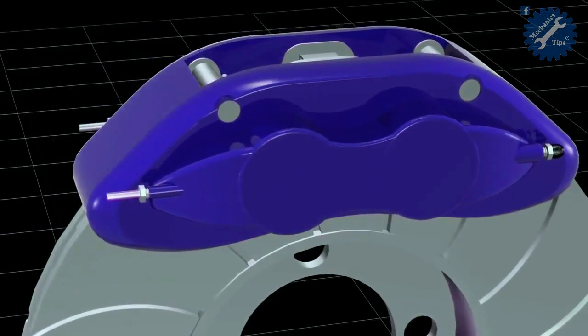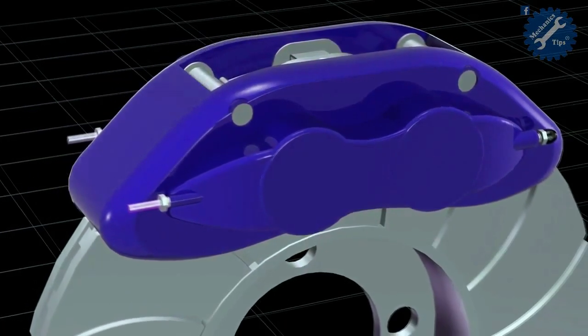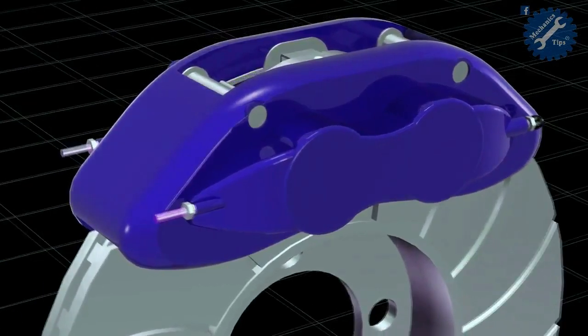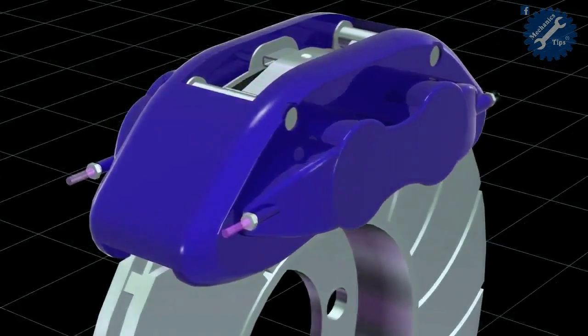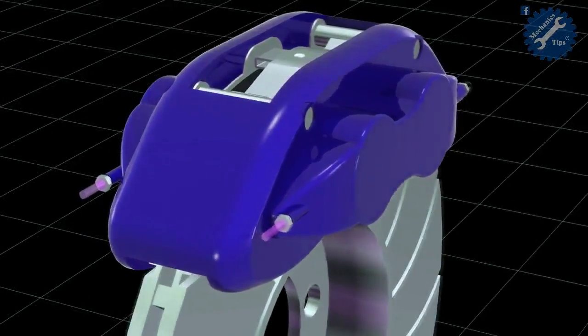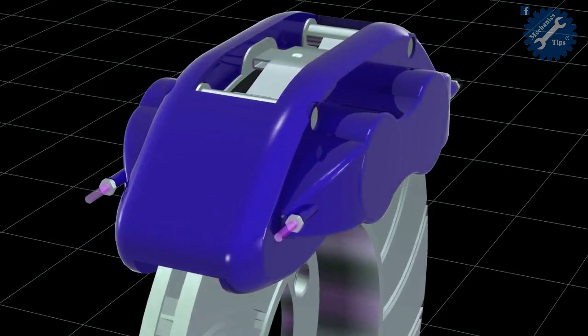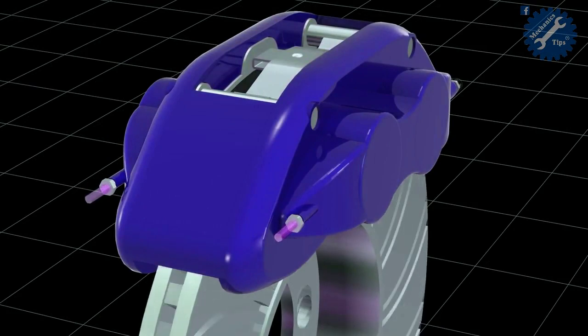A disc brake is a type of brake that uses calipers to squeeze pairs of pads against a disc in order to create friction that retards the rotation of a shaft, such as a vehicle axle, either to reduce its rotational speed or to hold it stationary. The energy of motion is converted into waste heat which must be dispersed.